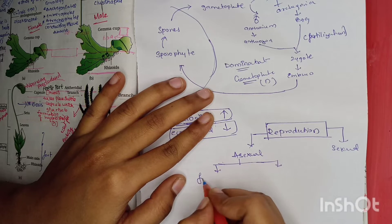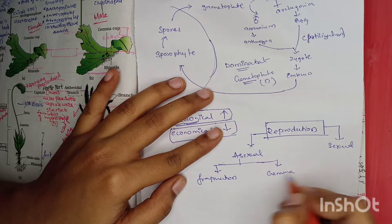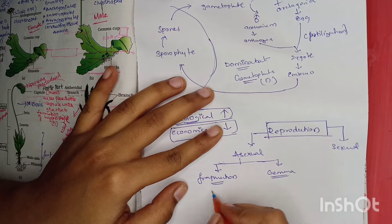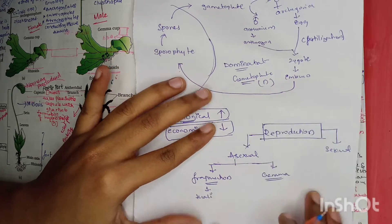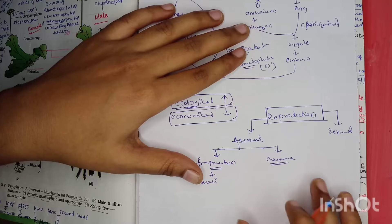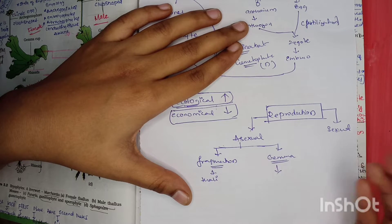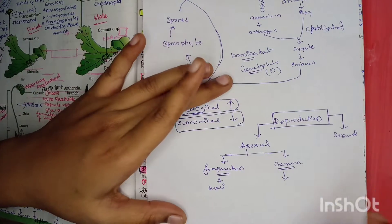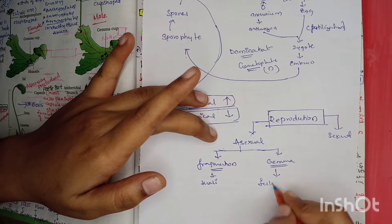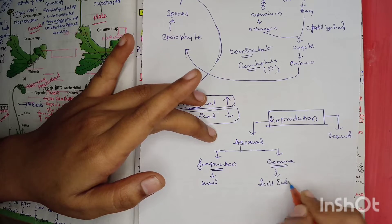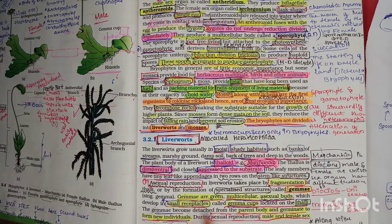Asexual reproduction occurs by two types: fragmentation - where the thalli divide into fragments and each develops into a new individual - and gemma cup formation, where gemma detach from the parent body and develop into another fully developed individual.